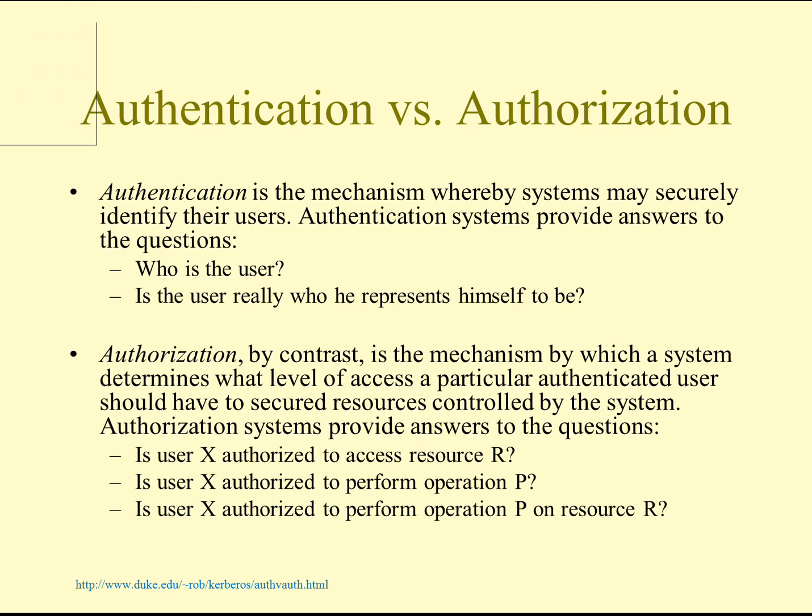Authentication versus authorization — authentication is a mechanism where systems may securely identify their users. They answer who's the user and is the user really who they say they are. Authorization, on the other hand, is how a system determines what level of access a particular authenticated user should have to specific resources controlled by the system — such as, is this user authorized to access this resource, perform some operation, or perform an operation on some resource. This is the distinction between authentication and authorization.